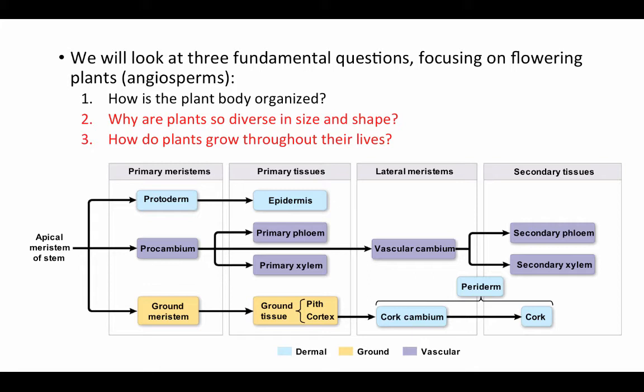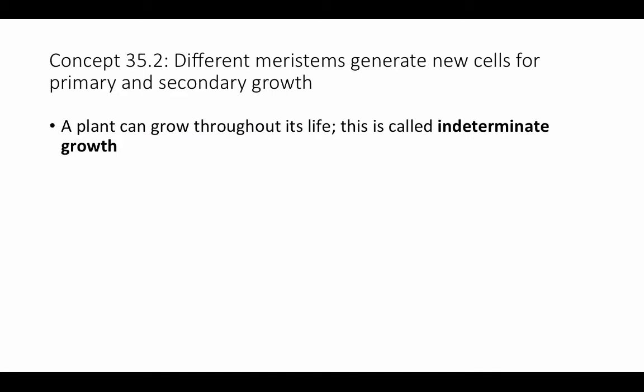Over the course of this web lecture, we'll build toward a summary concept map, working through all the different levels of development. First, the ultimate source of growth in a plant are tissues called meristems, which are responsible for generating new cells. A plant can grow throughout its life — this is called indeterminate growth. It's not limited to a particular size; as long as conditions are favorable, a plant will continue to grow.